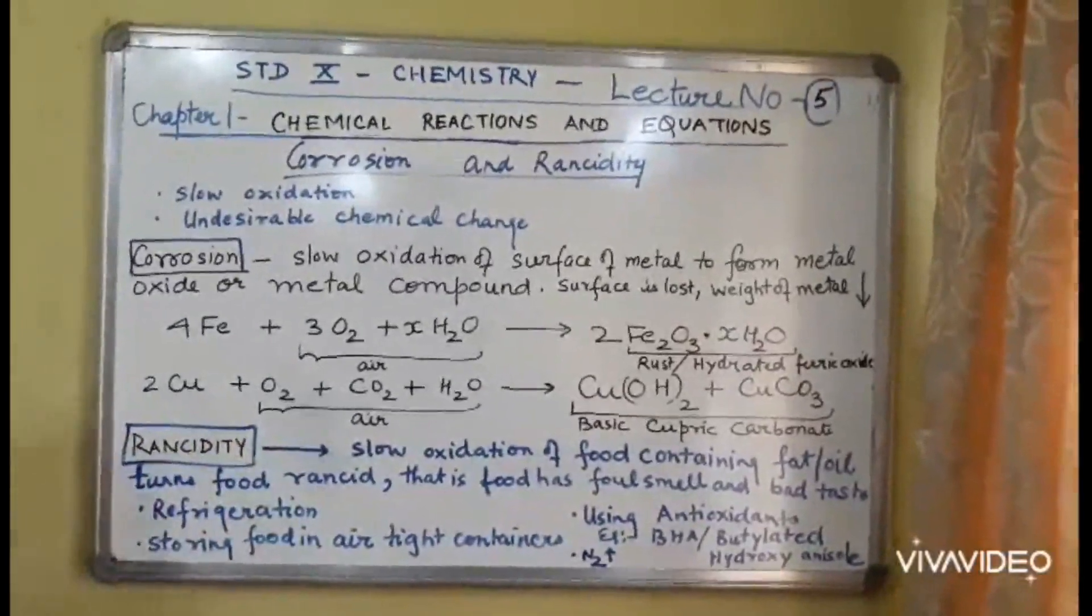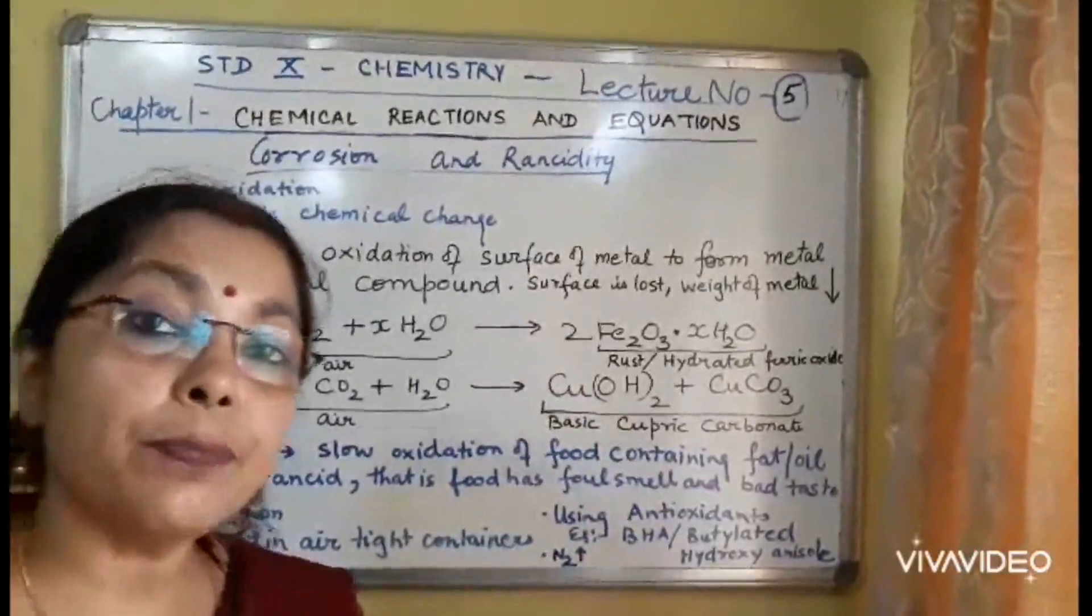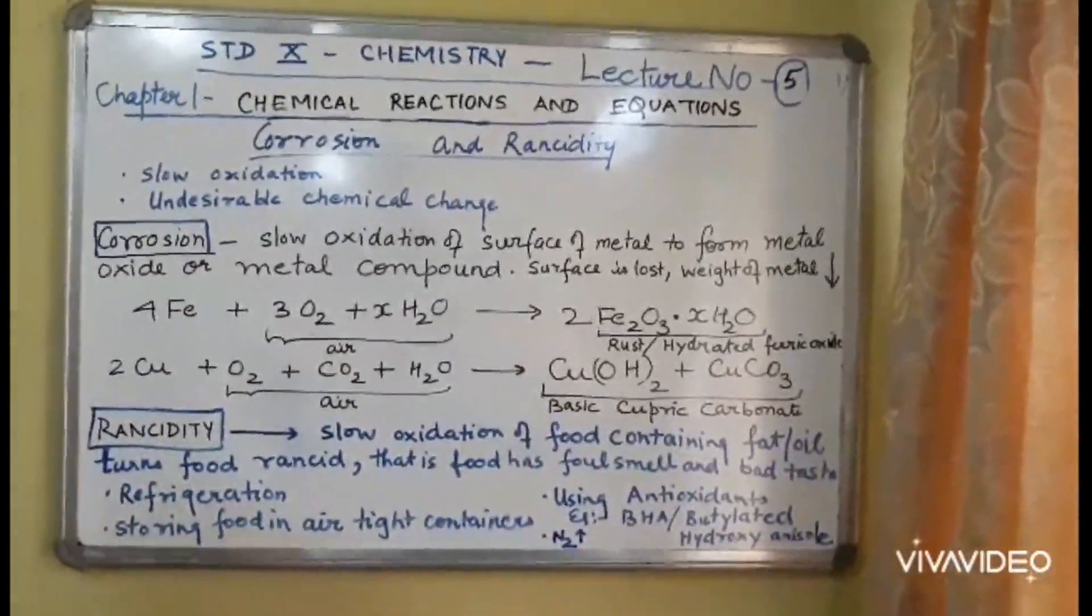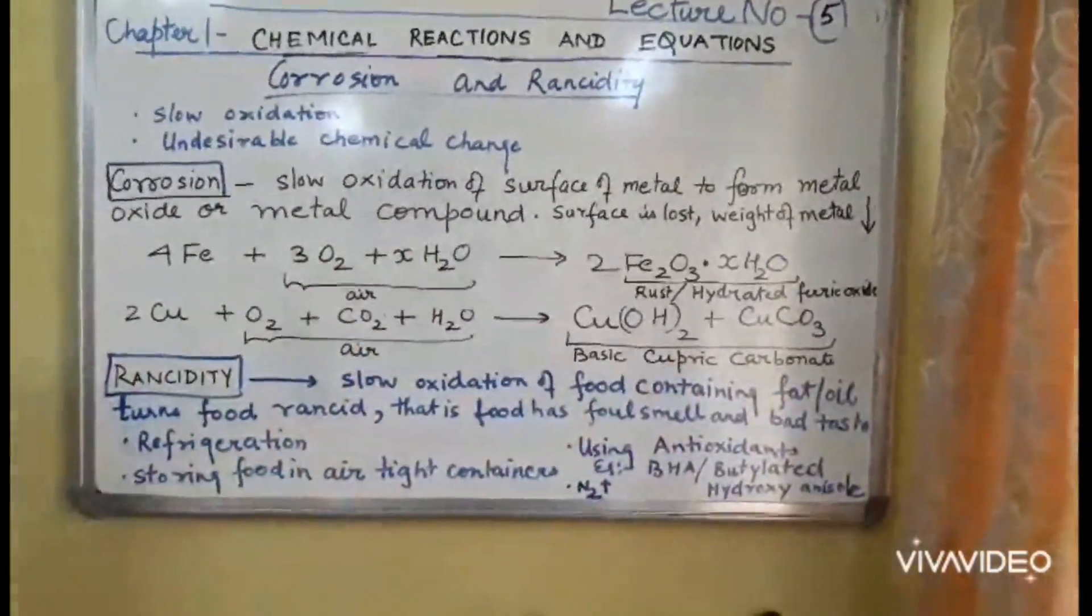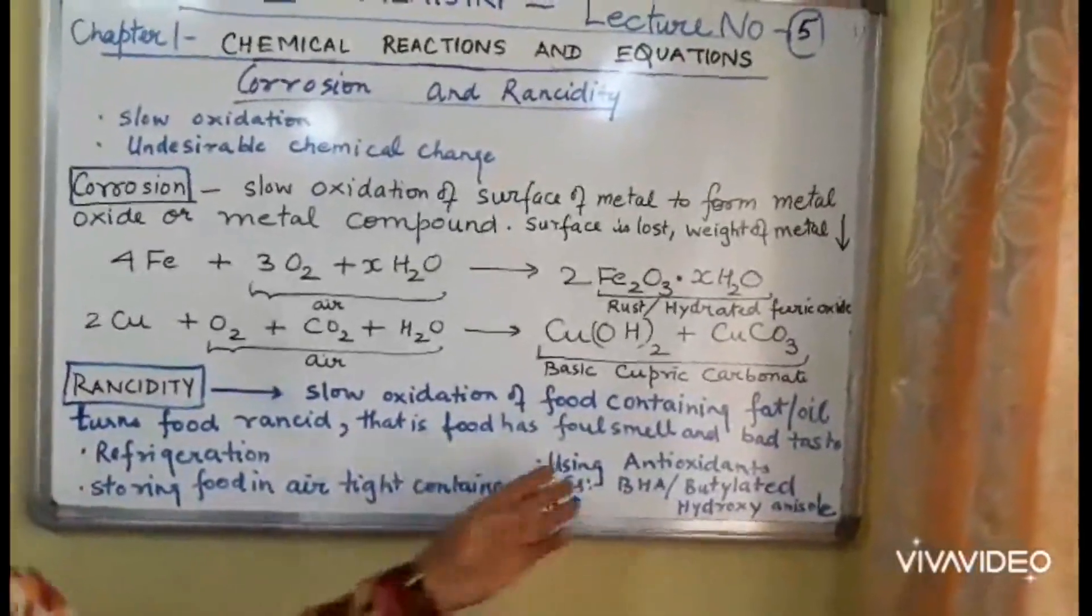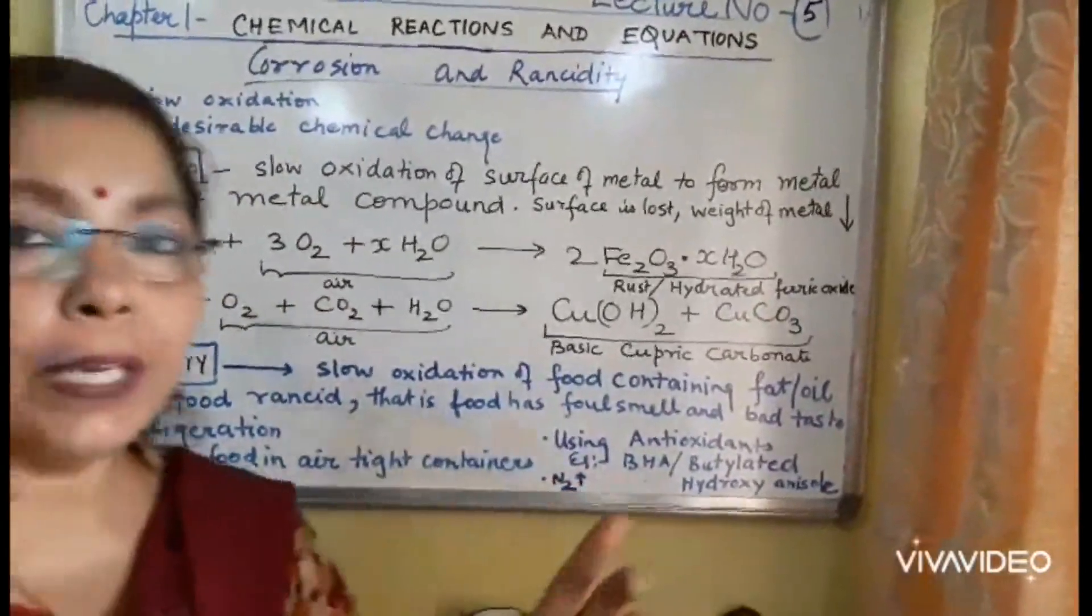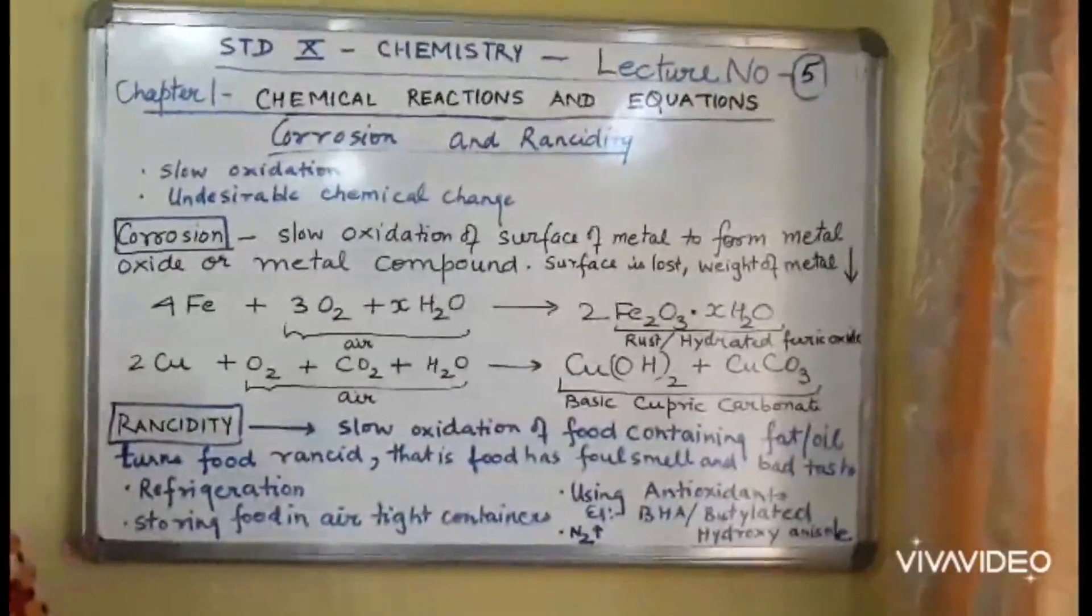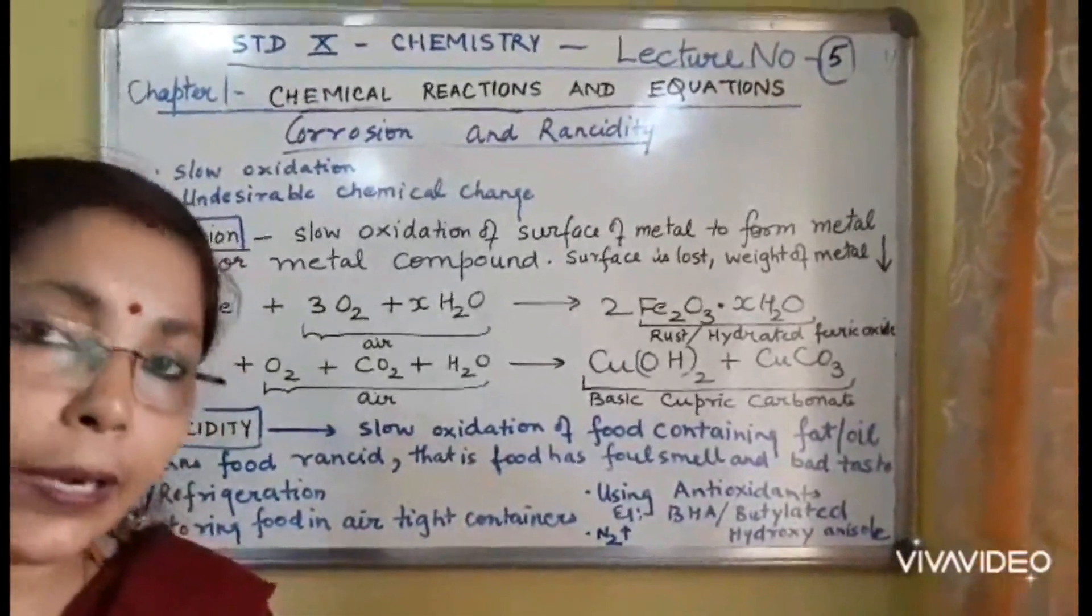Rancidity. Rancidity is also a slow oxidation. This is slow oxidation of food, which contains mainly fat and oil. This fat and oil, which is present in the food, gets spoiled. The food is spoiled. You can identify by foul smell and bad taste. To prevent rancidity, the food must be refrigerated. It must be stored in airtight containers. We can use antioxidants. And the most common one you are familiar with is use of nitrogen gas. Chips packets are flushed with nitrogen gas to see to it that wafers and chips do not spoil. Keep studying. With this, we come to the end of chapter 1.